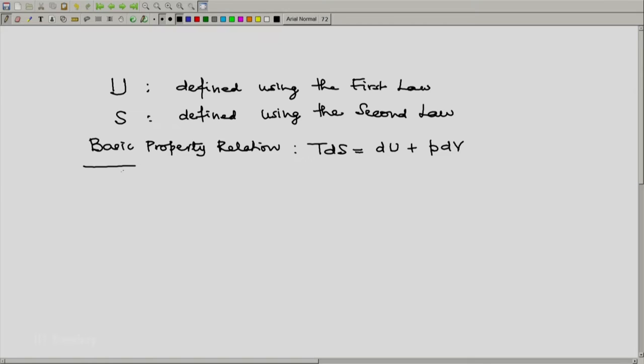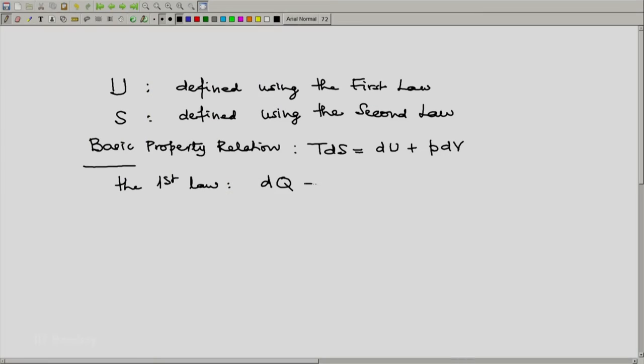And after this we have two laws which bring in interactions and the first law is in its differential form. Again remember we are looking at a closed system which is simple compressible and which is at rest. Hence we will have dQ equals dU plus dW. And we will have the second law which says T dS is greater than or equal to dQ. And if you substitute for dQ from the first law we get T dS is greater than or equal to dU plus dW.